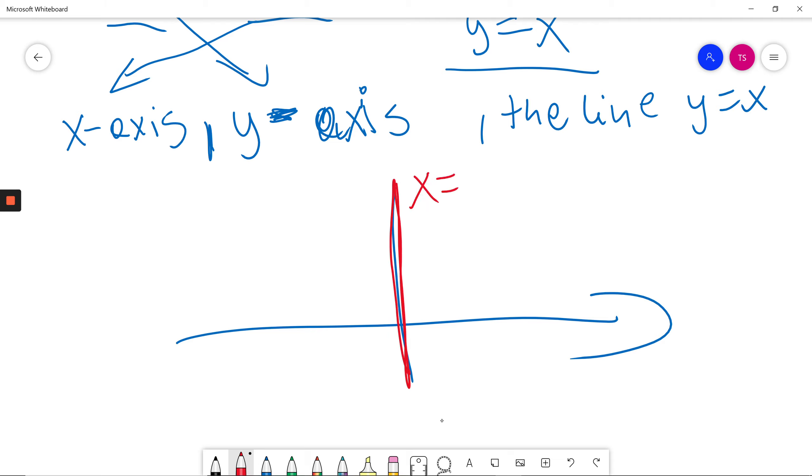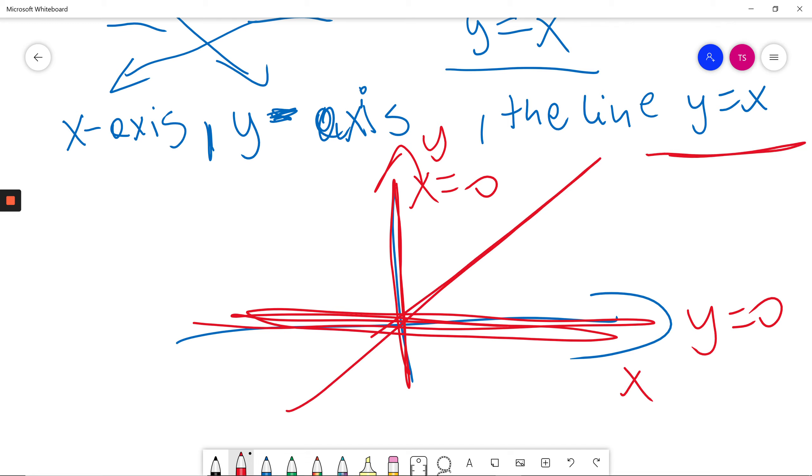x = 0 is the y-axis, y = 0 is the x-axis, and y = x is the diagonal line.